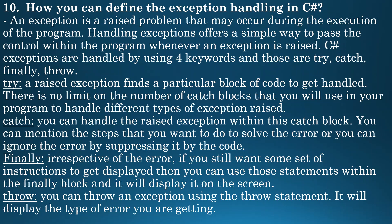Next question: how can you define exception handling in C-Sharp? An exception is a raised problem that may occur during the execution of the program. Handling exceptions offers a simple way to pass control within the program whenever an exception is raised. C-Sharp exceptions are handled using four keywords: try, catch, finally, and throw.